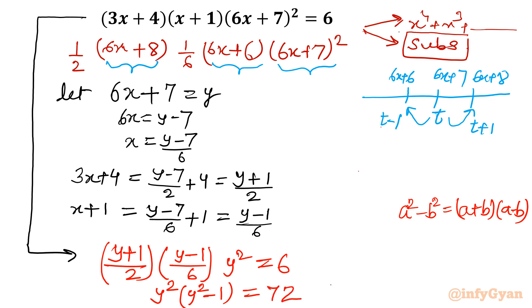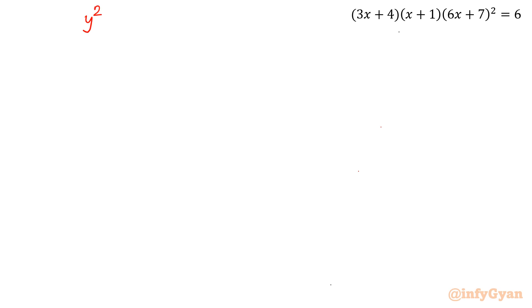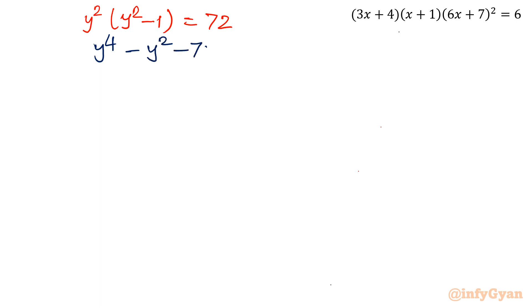12 times 6 is 72. Expanding the bracket, we get y⁴ − y² − 72 = 0. This is a quadratic in y².